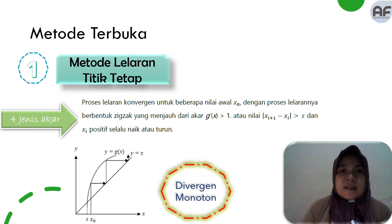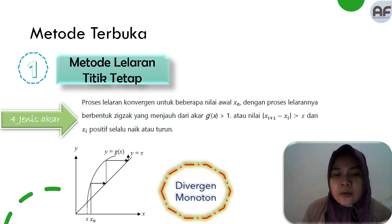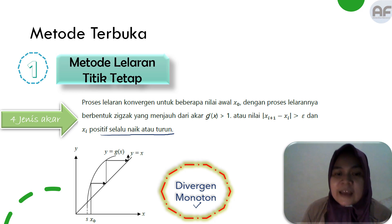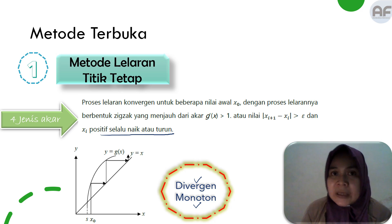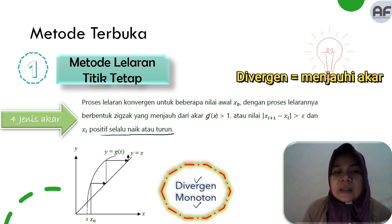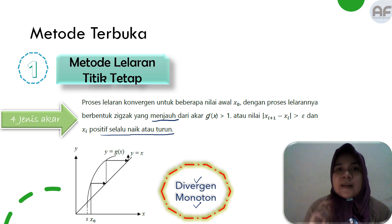Akar yang ketiga adalah divergent monotone. Ketika monotone, nilainya akan selalu naik atau selalu turun. Perbedaan divergent dengan convergent adalah: kalau convergent mendekati akar sesungguhnya, kalau divergent akan menjauhi akar sesungguhnya.